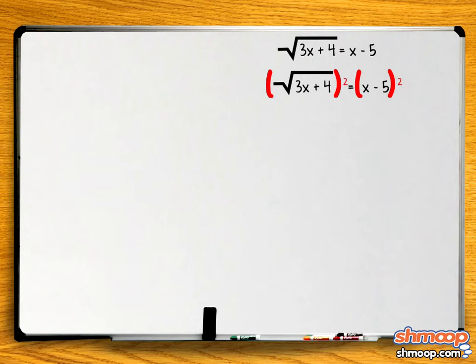Square both sides to get rid of the square root on the left side. And we get 3x plus 4 equals x minus 5 in parentheses, quantity squared.